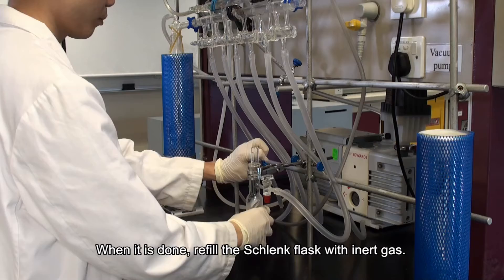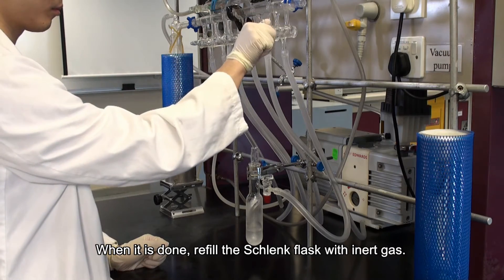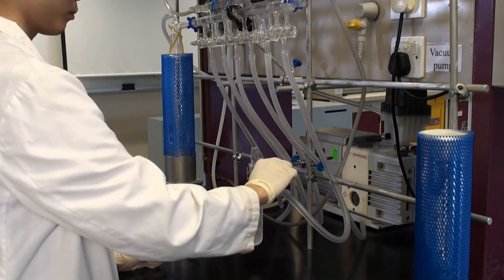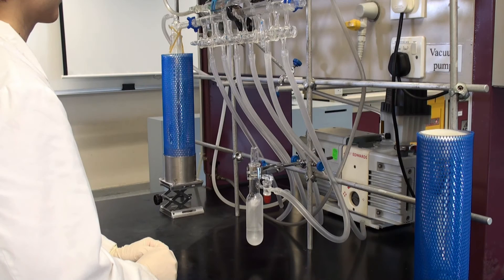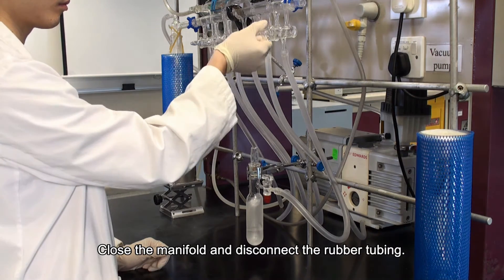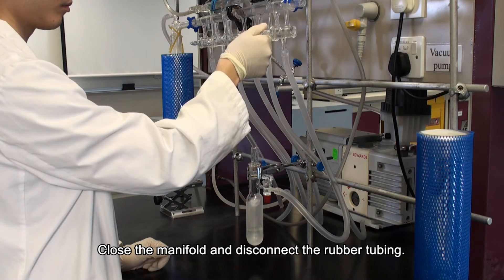When it is done, refill the Schlenk flask with inert gas. Close the manifold and disconnect the rubber tubing.